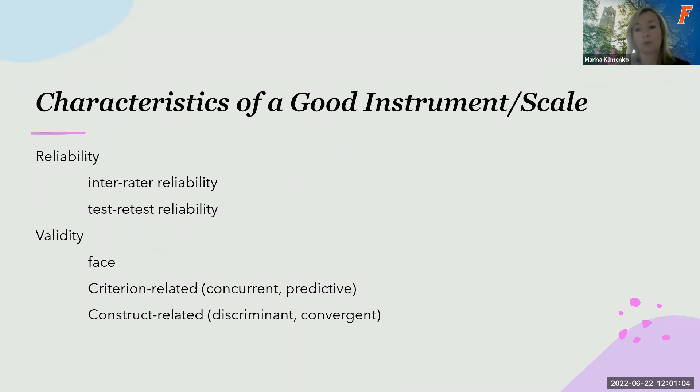The quality of an instrument or scale can be evaluated based on the following criteria. We can broadly talk about reliability and validity. First, let's talk about reliability. Scale reliability is essentially the consistency or the degree to which the scale measures the same way the construct that it is designed to measure. It's the consistency of the measures.